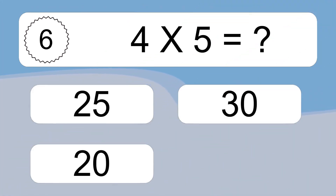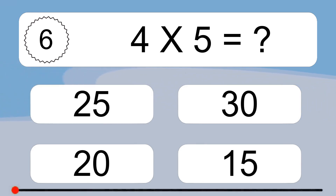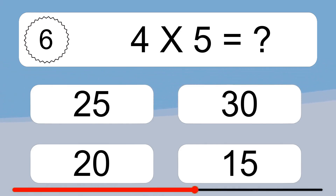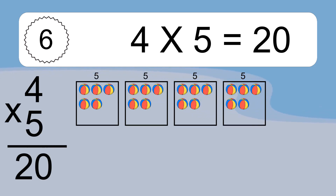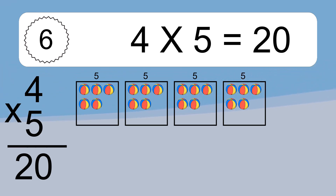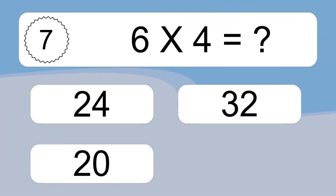4 times 5 equals what? 4 times 5 equals 20. We have 4 boxes, and each box has 5 colorful balls inside. If you count all the balls in all the boxes together, you will have 4 times 5 balls. This equals 20 balls.